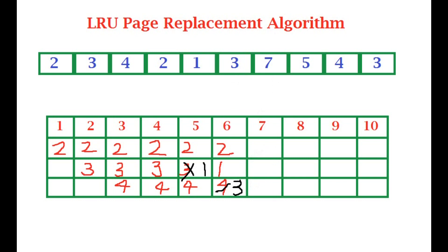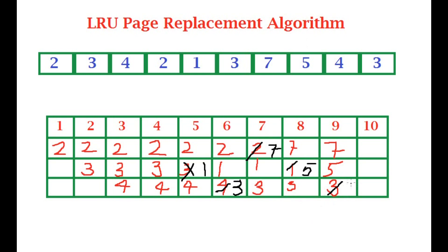In the seventh iteration, seven wants to come in, so the least recently used is two — we have one and three remaining, and two is the oldest, so we remove two and write seven here. Now five wants to come in and one is the oldest, so we remove one and write five. In the ninth iteration, four wants to come in — we have seven, five, and three, and three is the oldest so we remove three and write four.